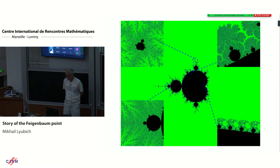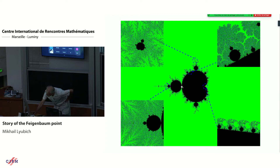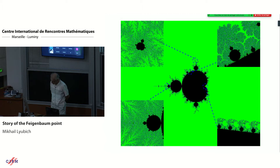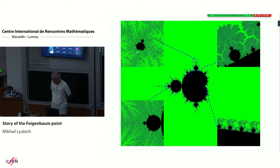One of the most famous is the self-similarity at the Feigenbaum point. When you blow up this part of the picture, you see that it looks exactly like the bigger picture - self-similarity is absolutely obvious here. Another picture of self-similarity is where you see a little copy of the Mandelbrot set which looks almost indistinguishable from the big Mandelbrot set, including this cusp.